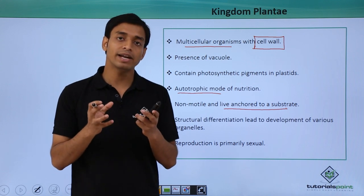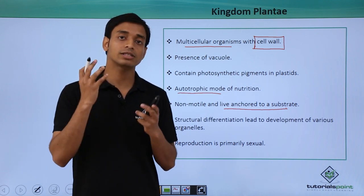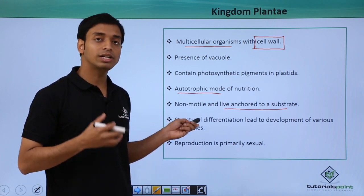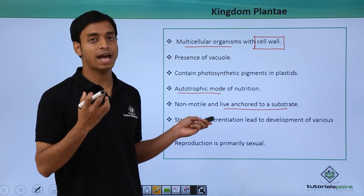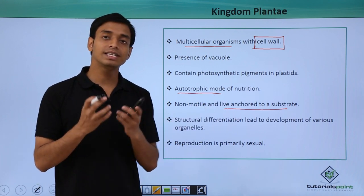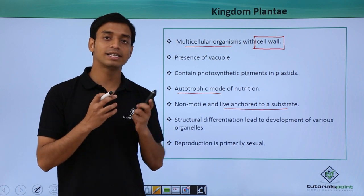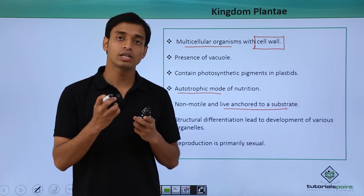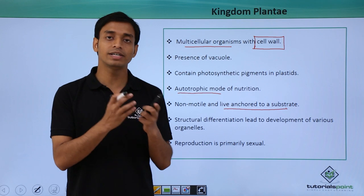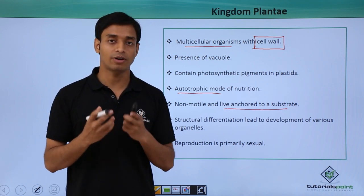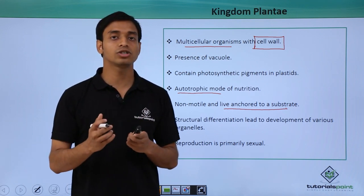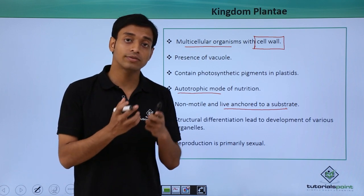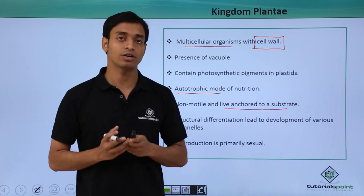Some plants can remain anchored to other areas or surfaces as well. Structural differentiation has occurred, because of which these plants have developed special organelles that can perform different specific functions. So structural differentiation has led to the formation of different organelles for specific functions.